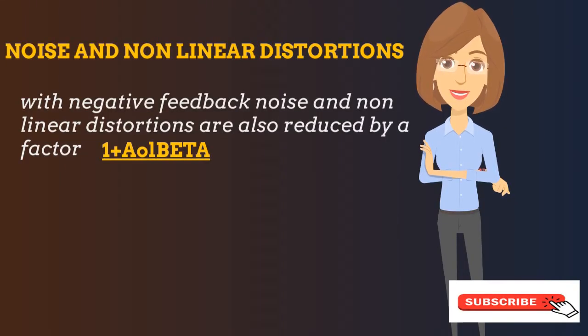Negative feedback can also reduce noise and non-linear distortions. Noise refers to interferences, and non-linear distortions are extra frequencies or signals observed at the output that were not present at the input.